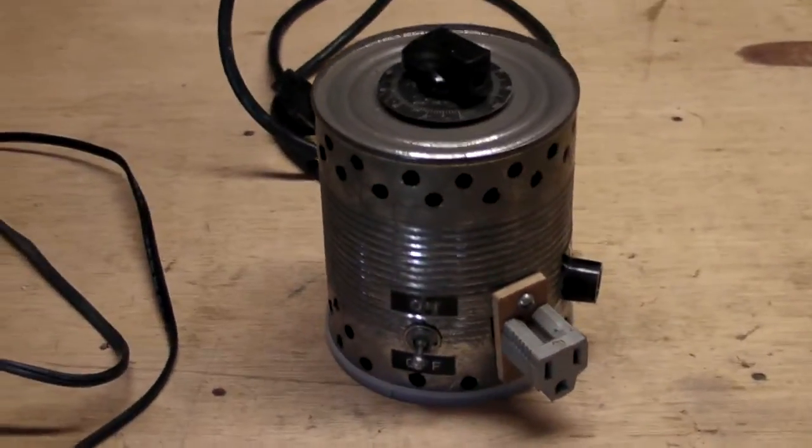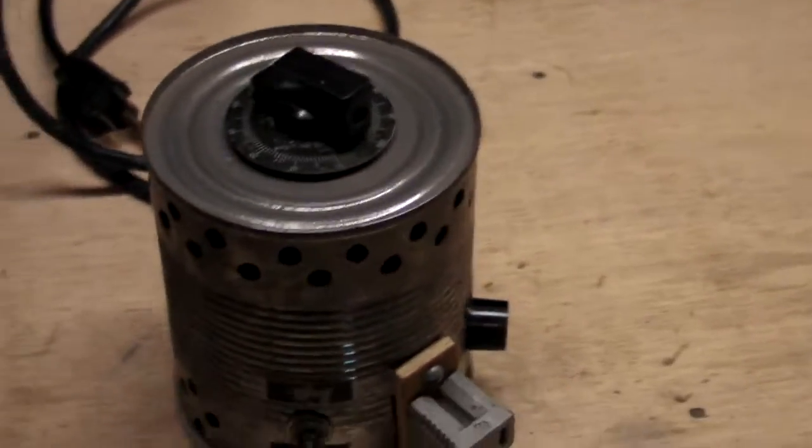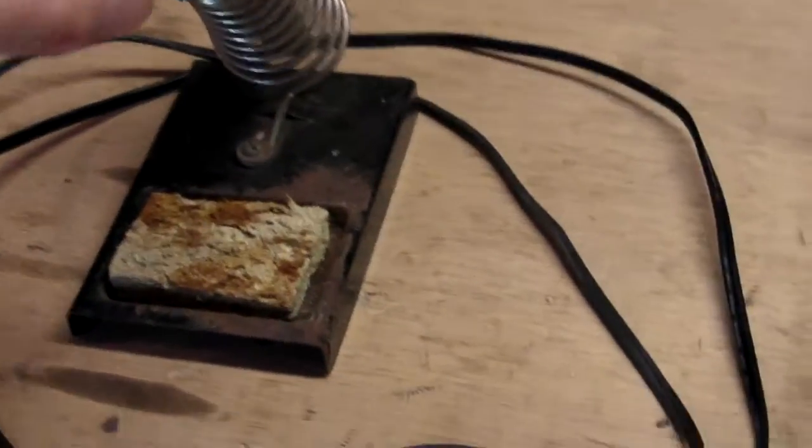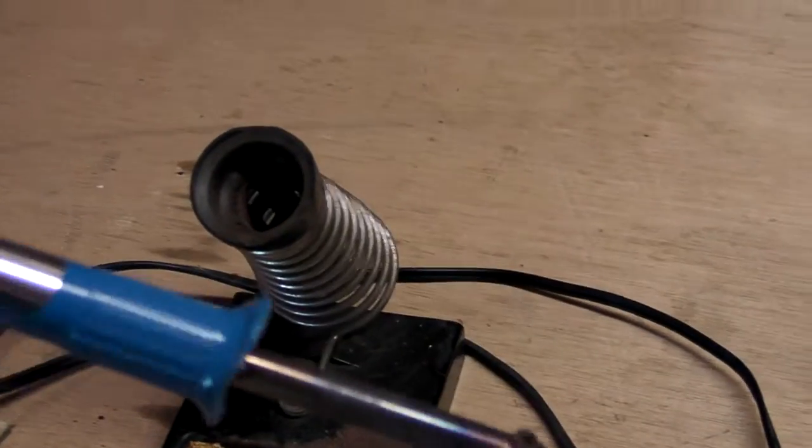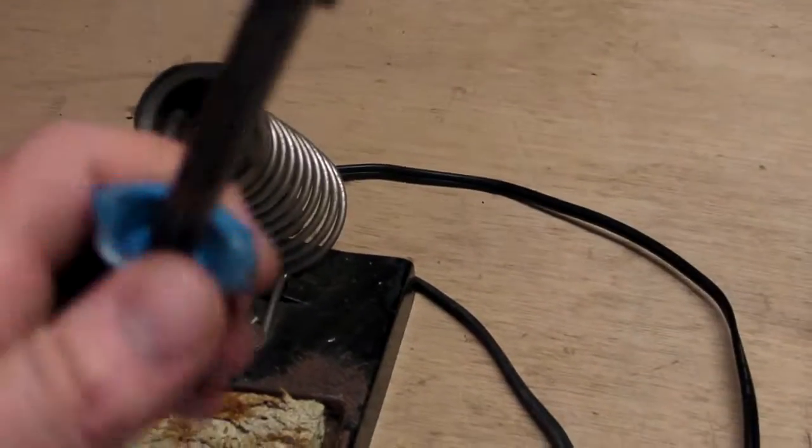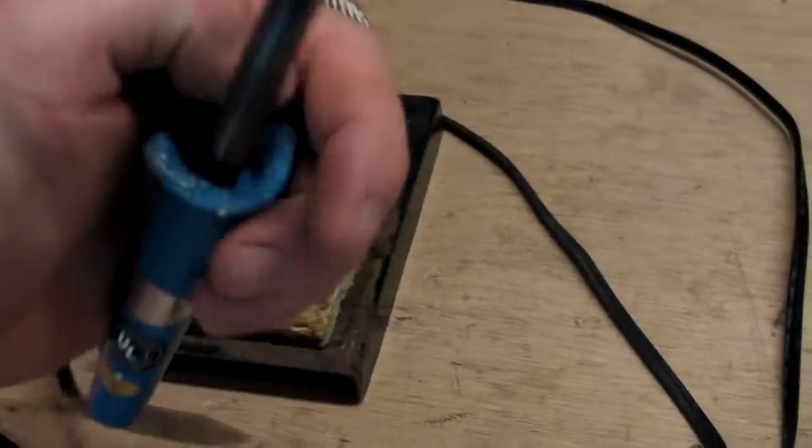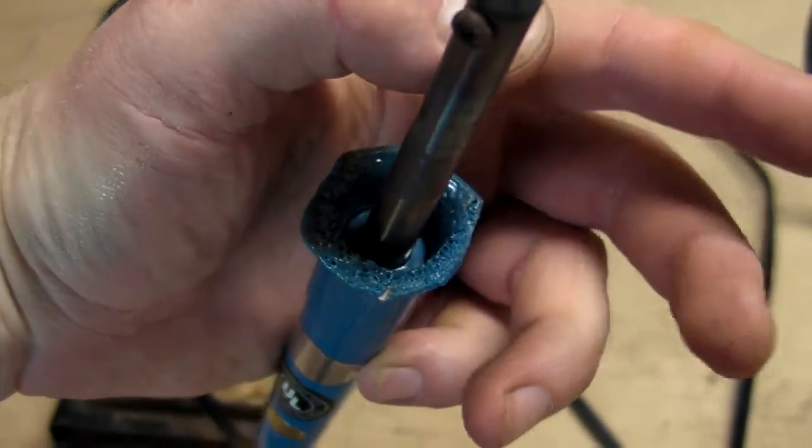Here is a cute coffee can construction. It's a variable AC power supply that I used to power up this cheap soldering iron here because it was getting so hot that it actually melted the plastic on the end of the handle here.